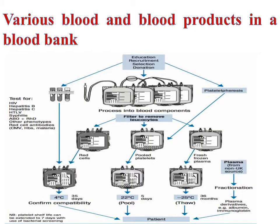Here are the various blood products in the blood bank. First, we take blood from the donor and send it to the laboratory for testing for various diseases such as HIV, Hepatitis B, Hepatitis C, syphilis, and many other diseases. Then we check for compatibility and transfuse the blood to the patient.